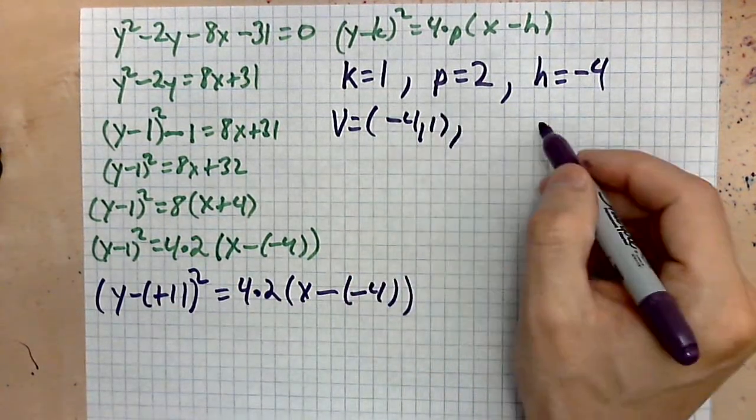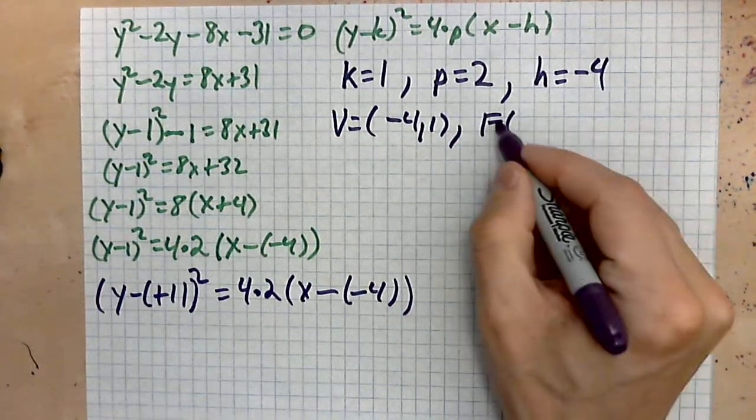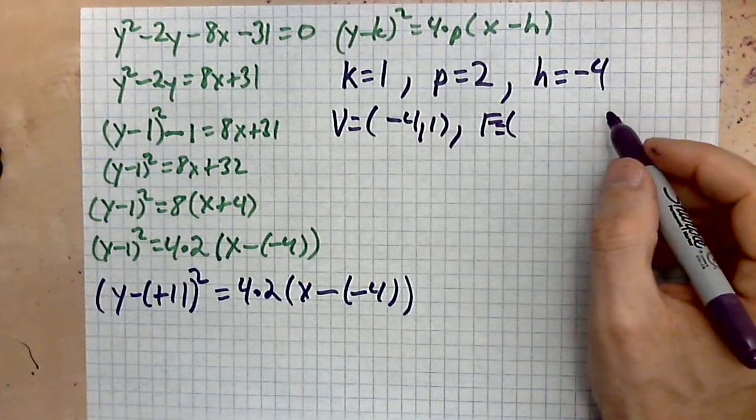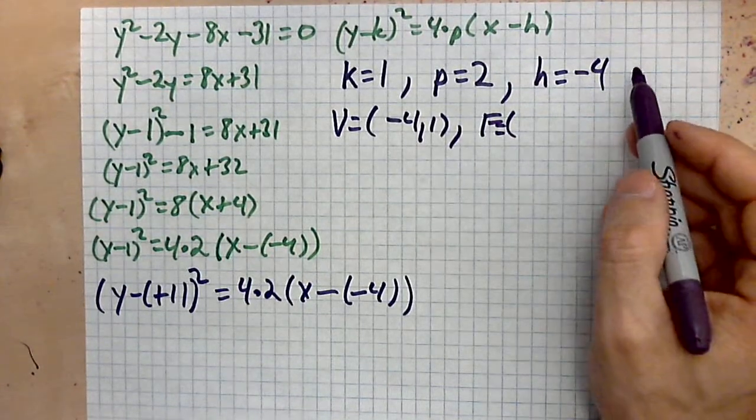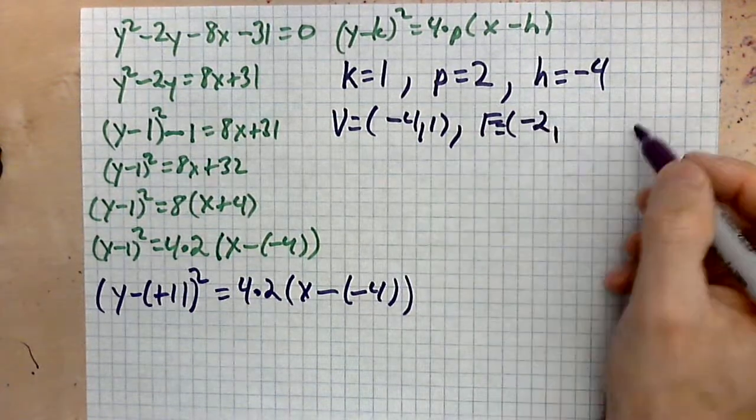So V is negative four comma one. That's the vertex. The focus then is the following: h plus p, so h plus p will be negative four plus two, which is negative two, and then